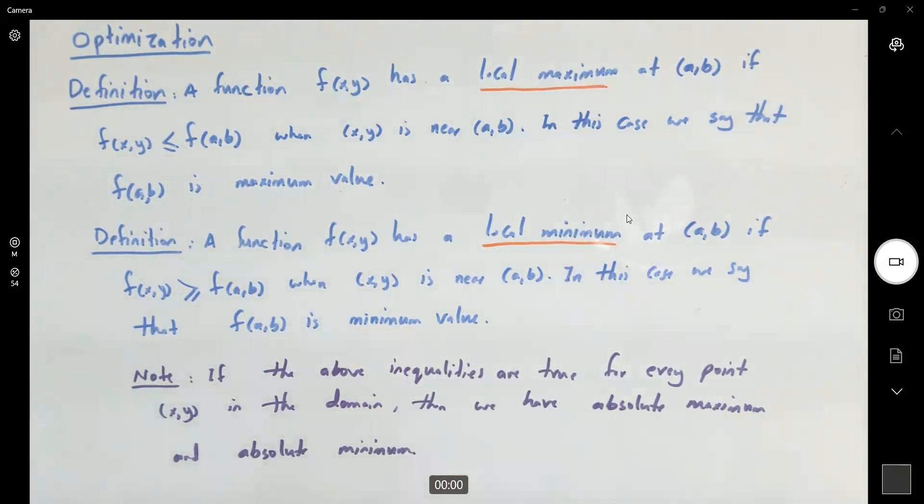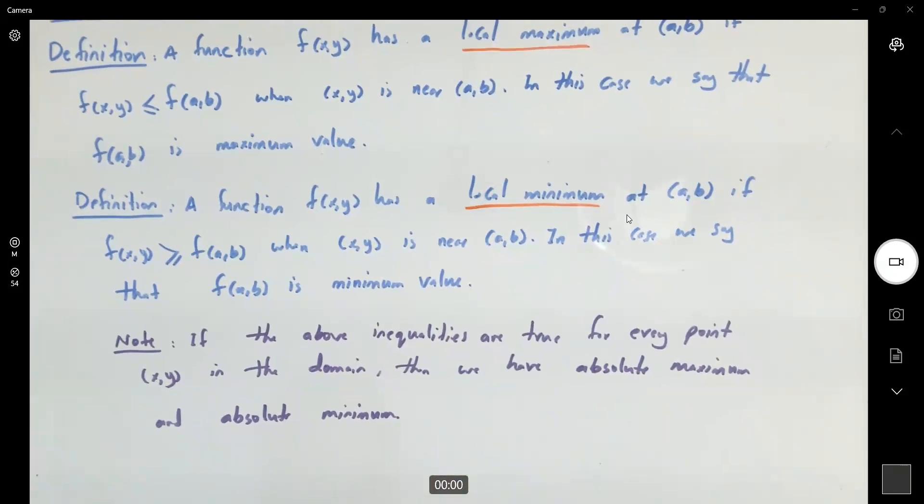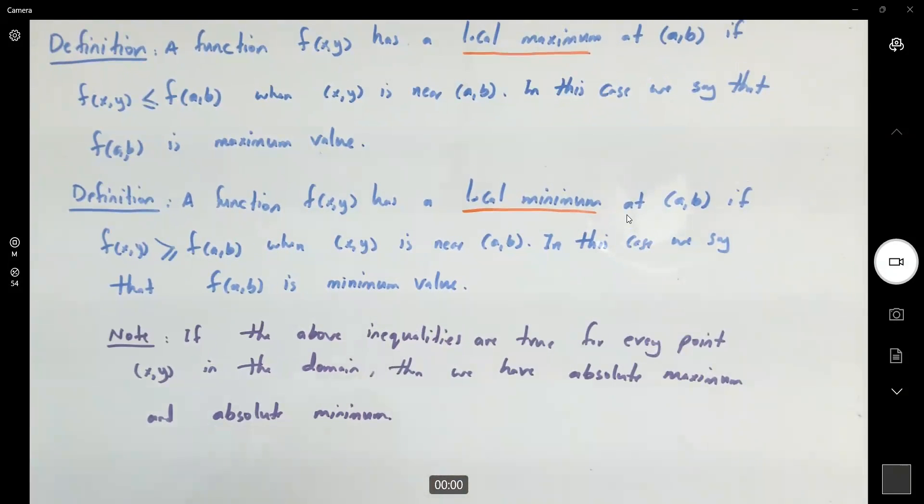For example, consider the following surface here. For the surface in the space, you have a maximum here and you have a minimum down there.